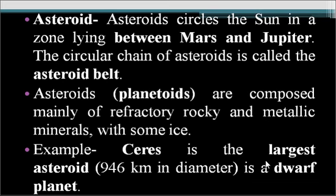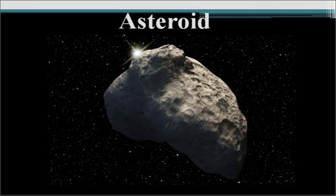Ceres is the largest known asteroid and is also a dwarf planet, with a diameter of 946 km. Asteroids are composed of metallic minerals with some ice and refractory rocky surfaces. This is a pictorial image of an asteroid — their actual sizes and shapes are much larger.